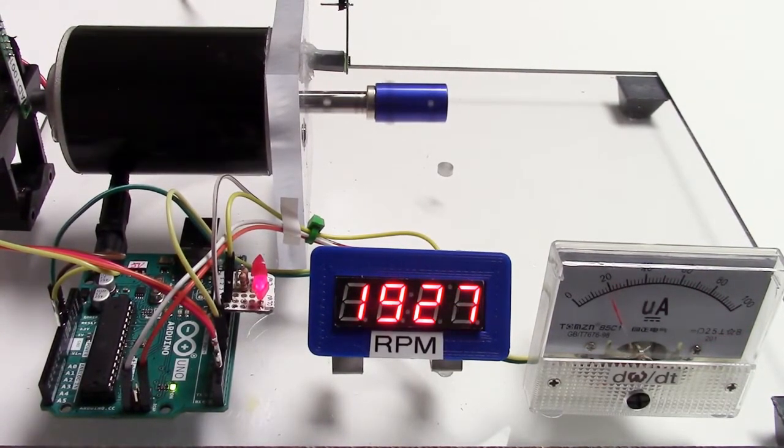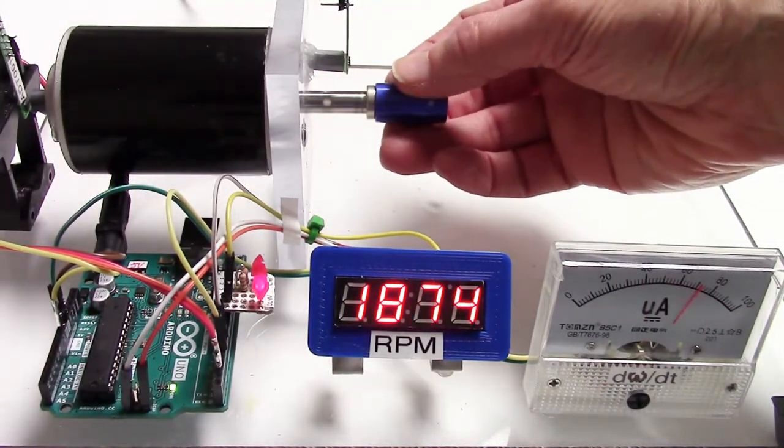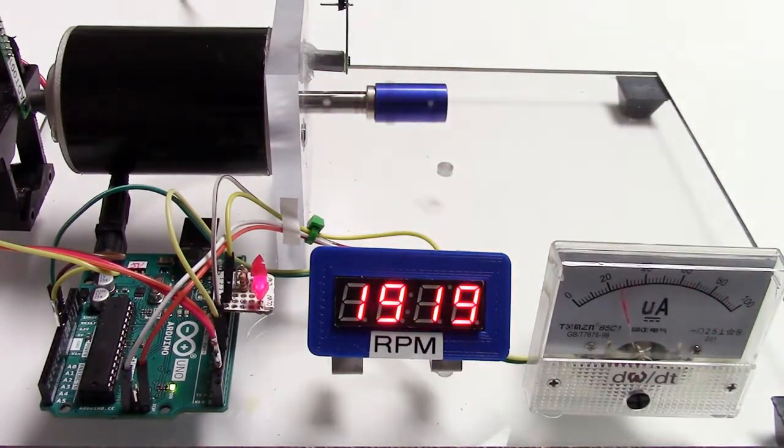Or if, for example, friction increases, the variation increases quite a bit even though the RPM only drops a little. So this could indicate a problem.